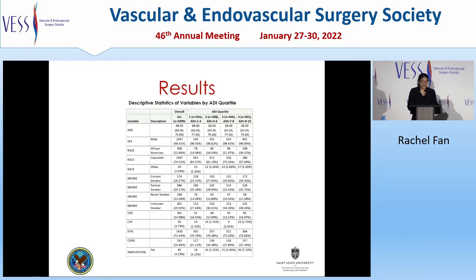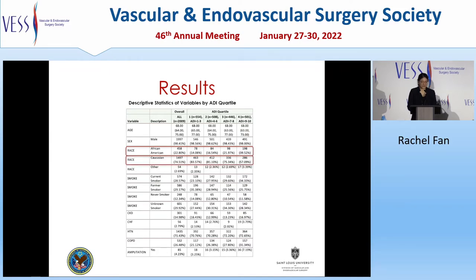ADI scores were organized into four quartiles. This table reflects the descriptive statistics of the study variables across the four ADI quartiles. The median age of the patients remained constant throughout the ADI quartiles. The proportion of African American patients increased as ADI quartile increased, while the proportion of Caucasian patients increased as ADI quartile decreased.